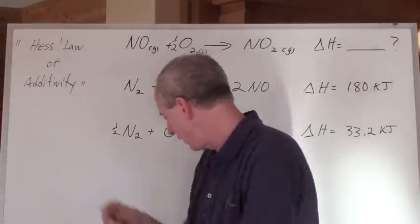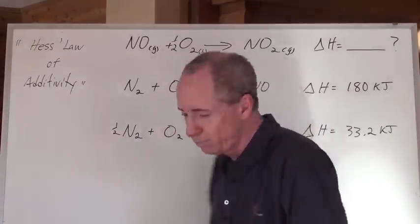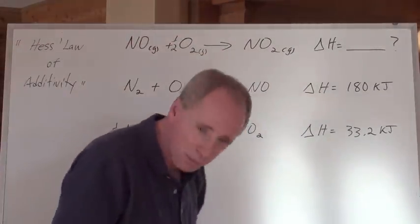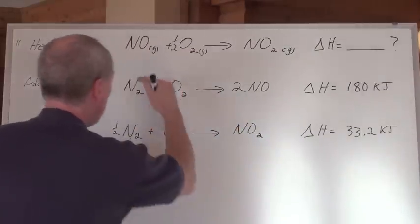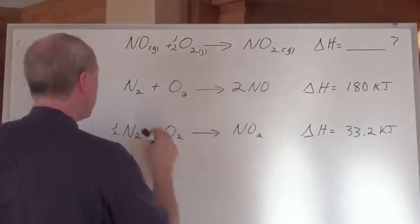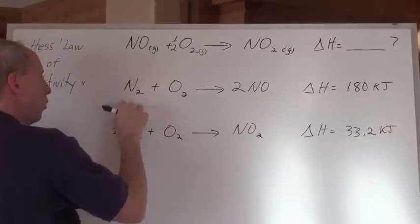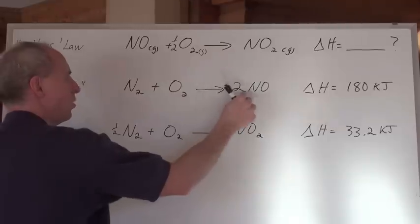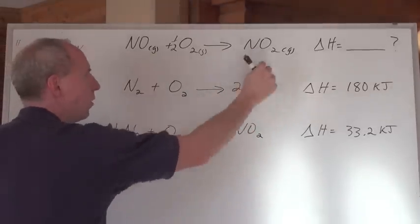Now, here's the thing. In this question, we're given these two equations saying, let's add them together to get this one. Problem? If you add these two equations together right here, you have to add all the reactants together and all the products together. And so, look, you end up with one and a half N2s plus two O2s makes two of those and one of those, and that's not that equation.